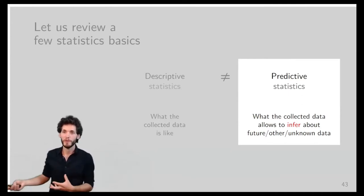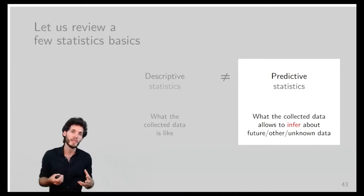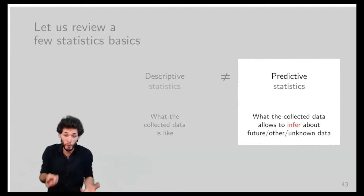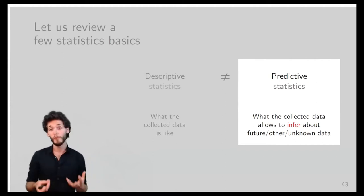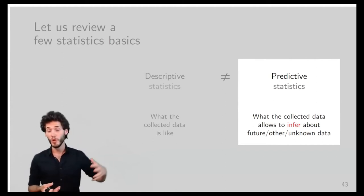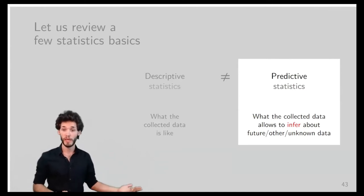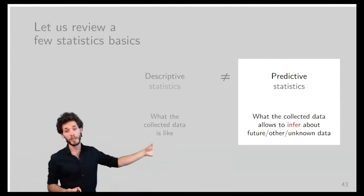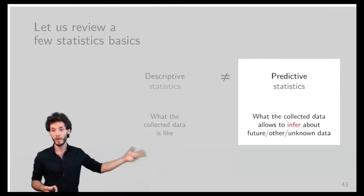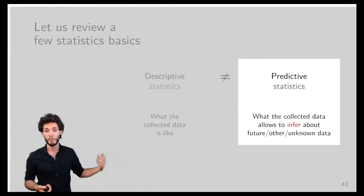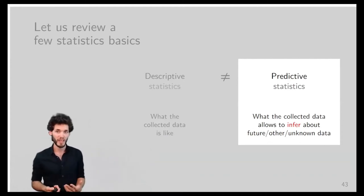A descriptive statistic describes what the data looks like, whereas a predictive one provides a number that allows us to infer information about future, unknown, or uncollected data. When we talk about replicability, what interests us is the latter — predictive statistics — because the whole point is to be able to answer: will someone get the same answer if they redo my experiment? That's definitely a prediction about the future, not just a description of what we obtained.